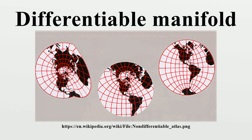An atlas on a topological space X is a collection of pairs called charts, where the U-alpha are open sets that cover X, and for each index alpha there is a homeomorphism of U-alpha onto an open subset of n-dimensional real space. The transition maps of the atlas are the functions relating these charts. Every topological manifold has an atlas. A C-k atlas is an atlas whose transition maps are C-k. A topological manifold has a C-k atlas, and in general a C-k manifold has a C-k atlas. A continuous atlas is a C-0 atlas, a smooth atlas is a C-infinity atlas, and an analytic atlas is a C-omega atlas.